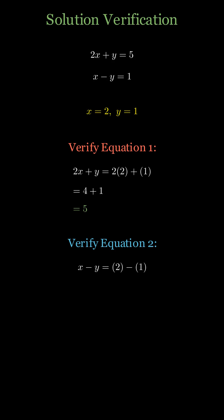Let's verify this solution by substituting back into the original equations. For equation 1: 2 times 2 plus 1 equals 4 plus 1 equals 5. For equation 2: 2 minus 1 equals 1.